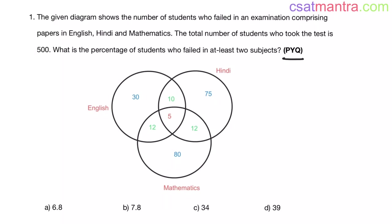The given diagram shows the number of students who failed in an examination comprising papers in English, Hindi and Mathematics. The total number of students who took the test is 500. What is the percentage of students who failed in at least two subjects?